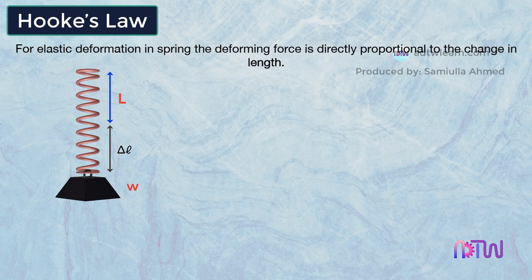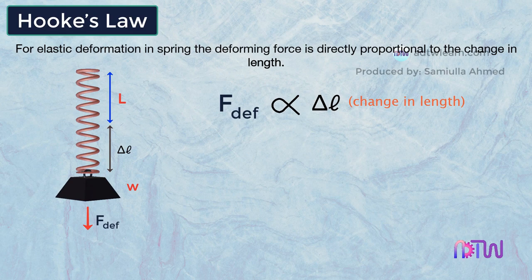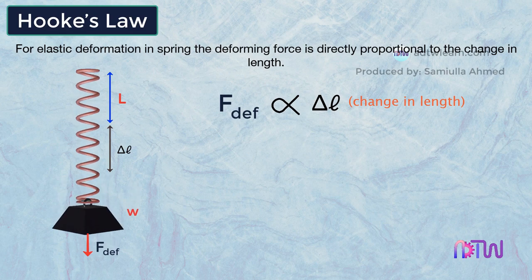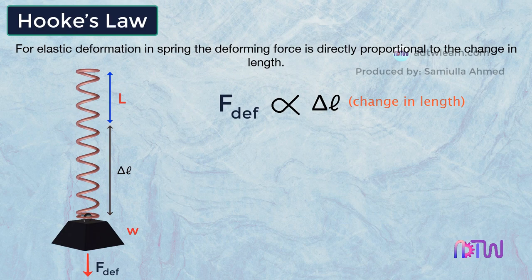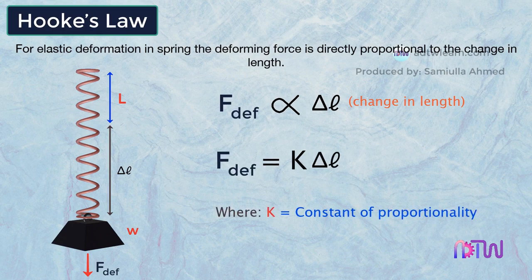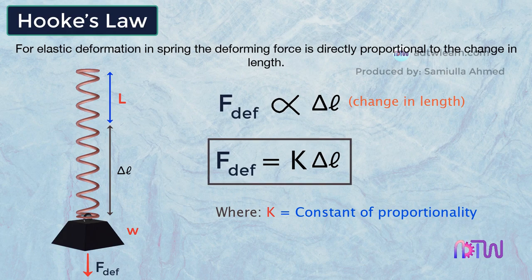Hooke's Law states that the load W hanging on the spring, or the deforming force applied on the spring due to load W, is directly proportional to the change in length of the spring. That means if the deforming force changes, the elongation of the spring also changes proportionally. In other words, the deforming force equals some constant times the change in length. Therefore, we write: F = K × ΔL. This is how Hooke's Law is expressed mathematically.